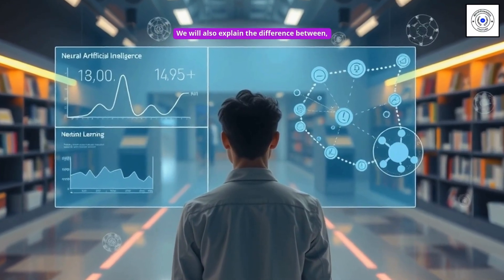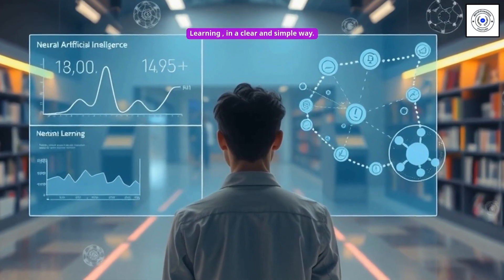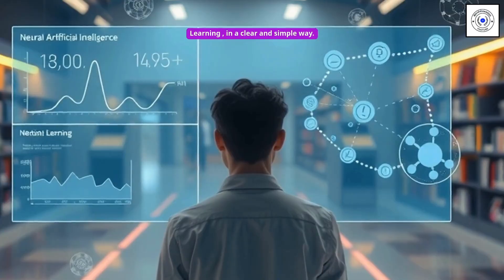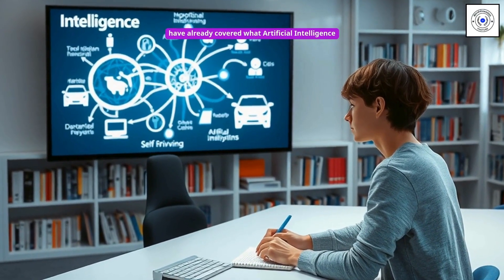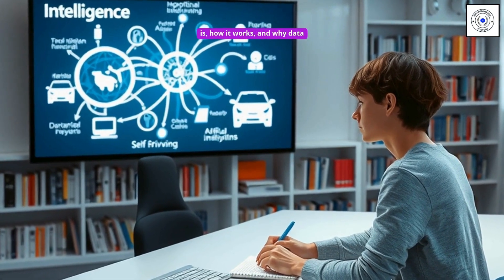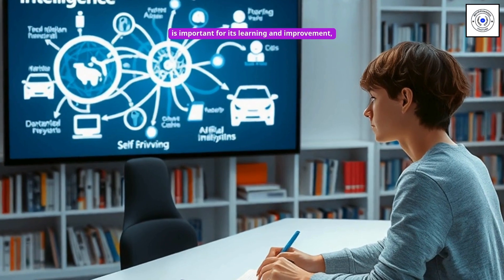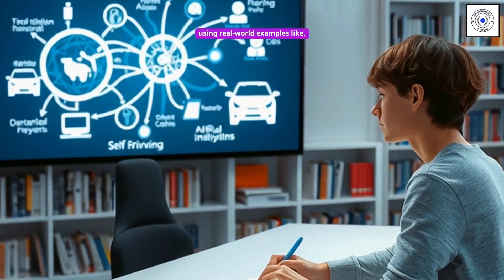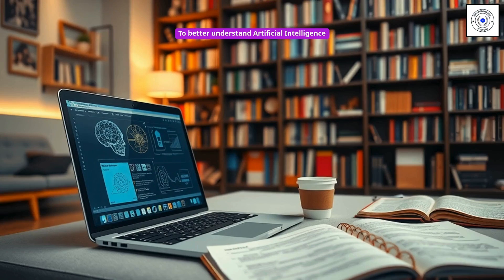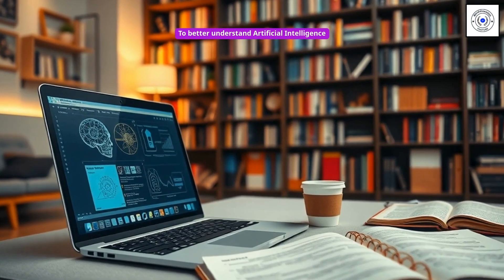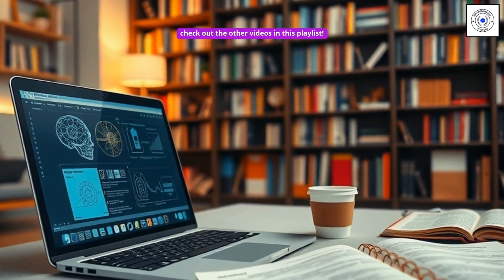We will also explain the difference between artificial intelligence and machine learning in a clear and simple way. In separate videos of this playlist, we have already covered what artificial intelligence is, how it works, and why data is important for its learning and improvement, using real-world examples like self-driving cars to explain the process. To better understand artificial intelligence and machine learning, make sure to check out the other videos in this playlist.